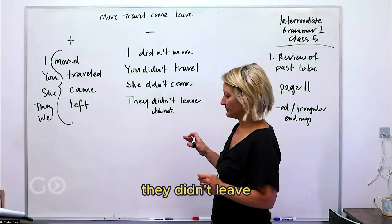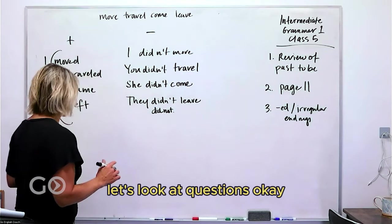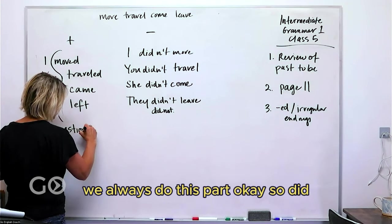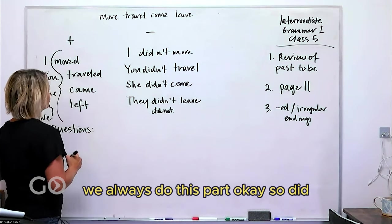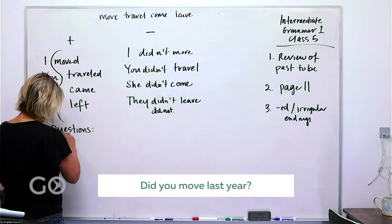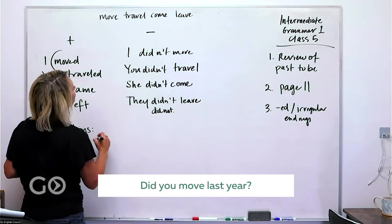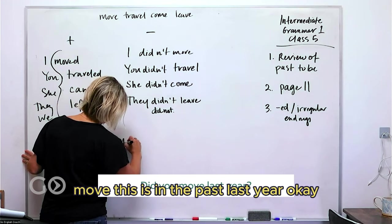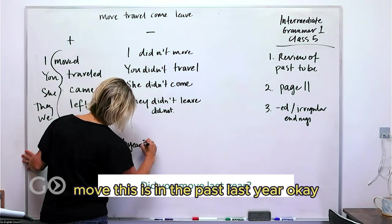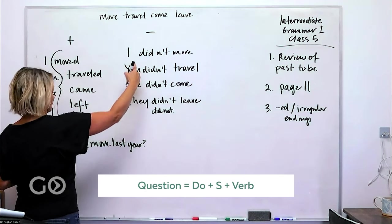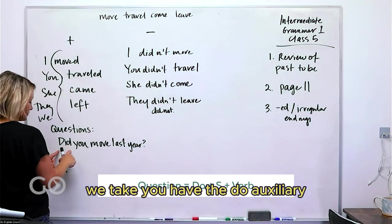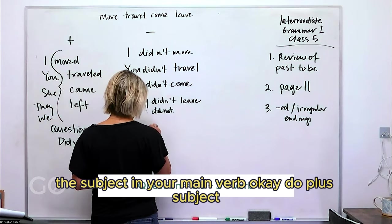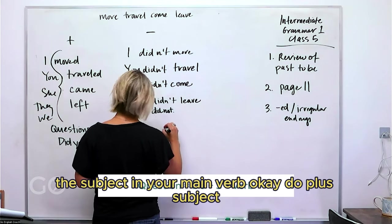So, she didn't come, they didn't leave. Hopefully that's easy for all of you. All right, let's look at questions. What happens with questions? In the yes-no questions we always do this part. Did you move? This is in the past, last year. So what happened? We take the do auxiliary, the subject, and your main verb. Do plus subject plus main verb—that's what that stands for.